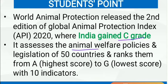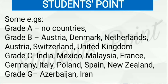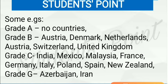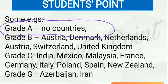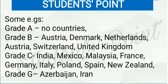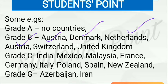The index assesses the animal welfare policies and legislation of 50 countries and ranks them from A, which is the highest score, to G, which is the lowest score, with 10 indicators. India has been ranked C along with Mexico, Malaysia, and France. No countries were able to gain grade A. In grade B, there were countries like Austria, Denmark, Netherlands, Switzerland, and United Kingdom.